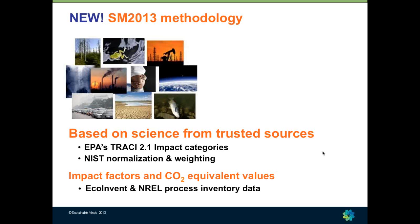This was developed in collaboration with Jane Bear. We're still using weighting factors to get to a single score, but there are also new normalization factors dedicated to Tracing 2.1 by CERIAC in Canada. So we have a new methodology still focusing on what we call impact factors and CD2 equivalent values.